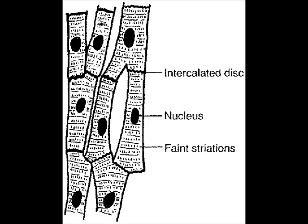Cardiac muscle cells are known as cardiac myocytes or cardiomyocytes. Cardiac muscle is one of three major types of muscle, the others being skeletal and smooth muscle.